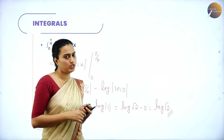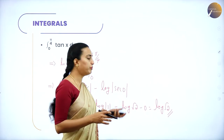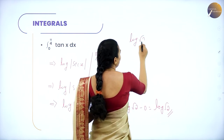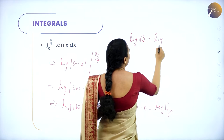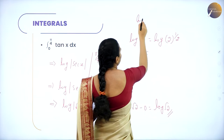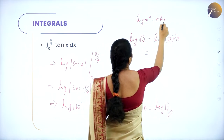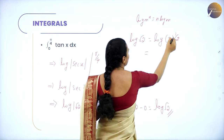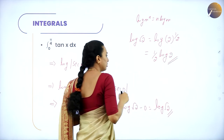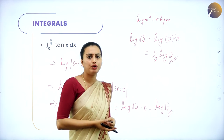Further simplifying: log√2 = log(2^(1/2)). Using the rule log(mⁿ) = n·log m, this becomes (1/2)log 2. So the final answer can also be written as (1/2)log 2.